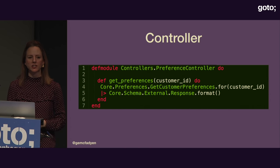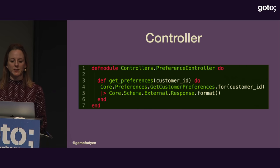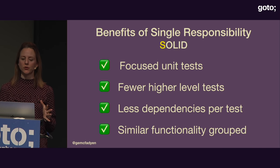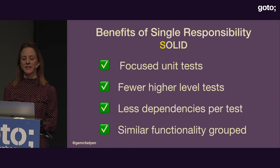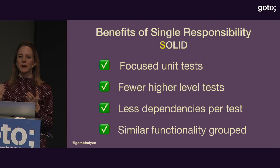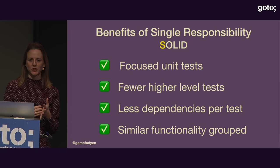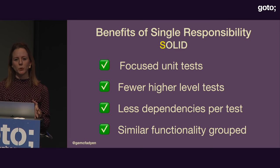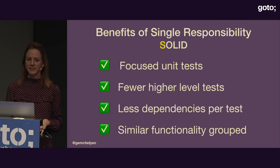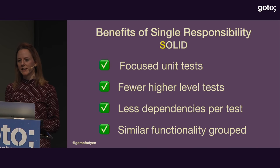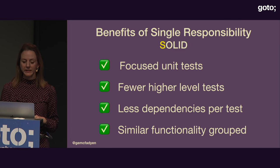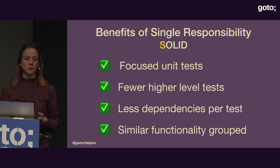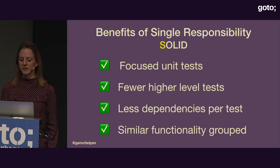Our controller now becomes quite thin — it just coordinates the calls between the new modules, making testing easier. When we had all the logic in one controller, to test the JSON formatting we'd need to hit the GET endpoint, mimic data coming back from the database, translate it into a struct, transform it to JSON, and then check it — an awful lot of setup. With smaller, more focused modules we get more focused tests, more focused failures, and quicker resolution. The number of high-level tests can be reduced because you only need to check that coordination is happening correctly.